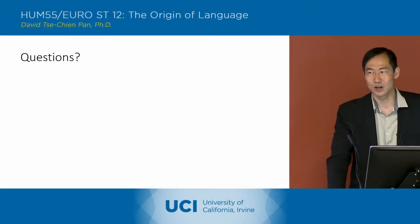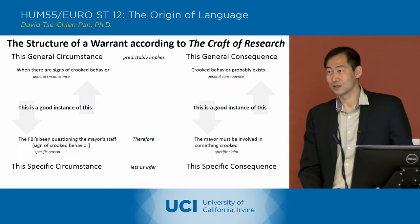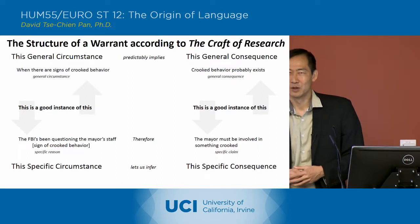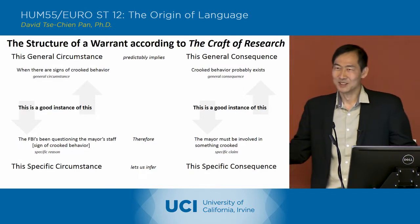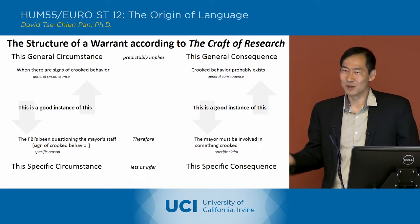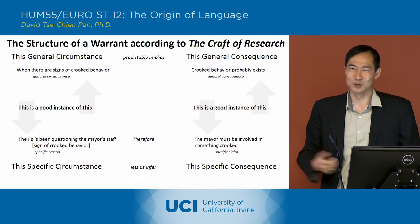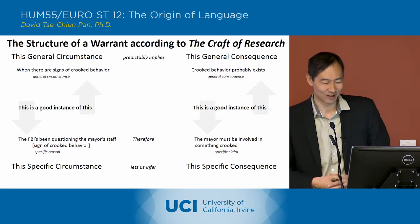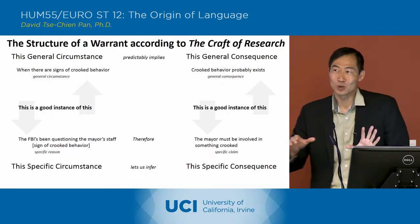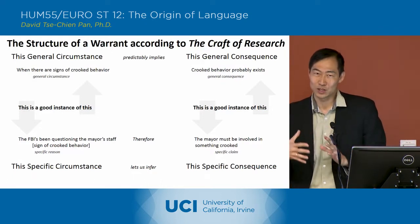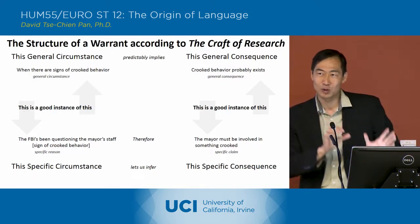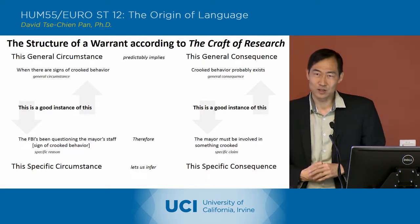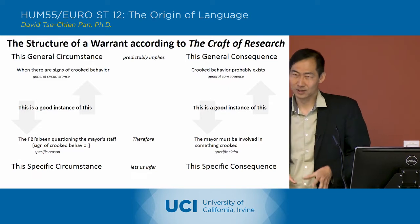Let's start with the diagram that they have in the text. This is exactly the diagram they have in the text when they're trying to describe the warrant. It's a pretty messy, complicated diagram and it's not clear what it's supposed to mean. We're going to go through this diagram piece by piece to reconstruct the argument that they're making in the Craft of Research about what the warrant is.